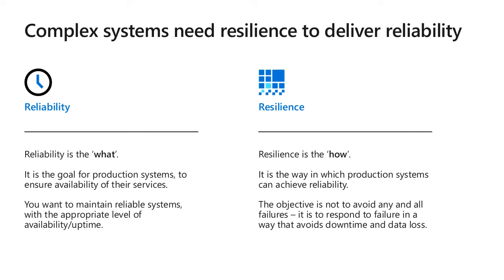Resiliency, on the other hand, is the how — the way in which production systems can achieve reliability. Resilience means it is not about avoiding all failures; you are actually expecting that there will be a failure. There are many causes of possible IT system failure. So it's essentially telling your users that in that rare occurrence when the application is not available, how fast are you going to be able to recover so users can go back to normal. Think of reliability as a 24/7 promise, and resilience as the guarantee to recover within, say, 2 hours.